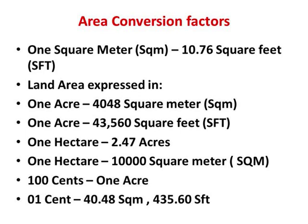For area conversion, 1 square meter equals 10.76 square feet. Land area is generally mentioned in acres or hectares. One acre is 4048 square meters or 43,560 square feet. One hectare is 2.47 acres, or 10,000 square meters. Another way of expressing area: 100 cents is 1 acre, or 1 cent is 40.48 square meters or 435.6 square feet.